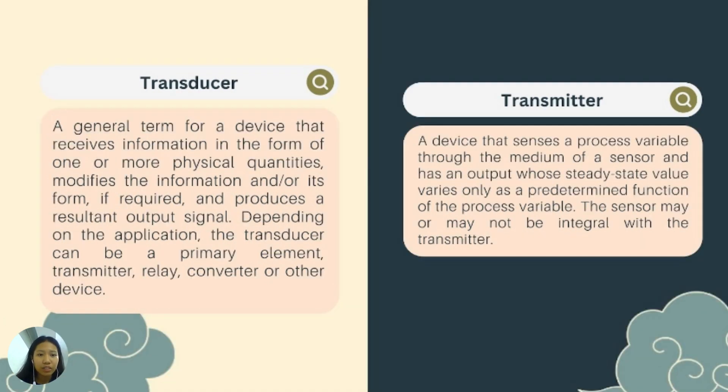Transducer. A general term for a device that receives information in the form of one or more physical quantities, modifies the information and or its form if required, and produces a resultant output signal depending on the application. Transducer can be a primary element, transmitter, relay, converter, or other device. Transmitter. A device that senses a process variable through the medium of a sensor and has an output whose steady state value varies only as a predetermined function of the process variable. The sensor may or may not be integral with the transmitter.